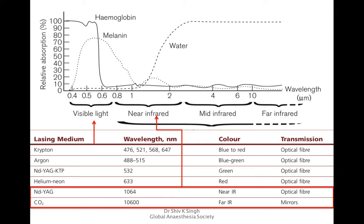There are also lasers in the infrared or near-infrared range. Neodymium YAG laser has a wavelength of 1064 nanometers and can be transmitted through optical fiber. However, carbon dioxide laser has a wavelength of 10,600 nanometers, falling in the far infrared range — it cannot be transmitted through optical fibers, so a series of acrylic mirrors is required to transmit it.